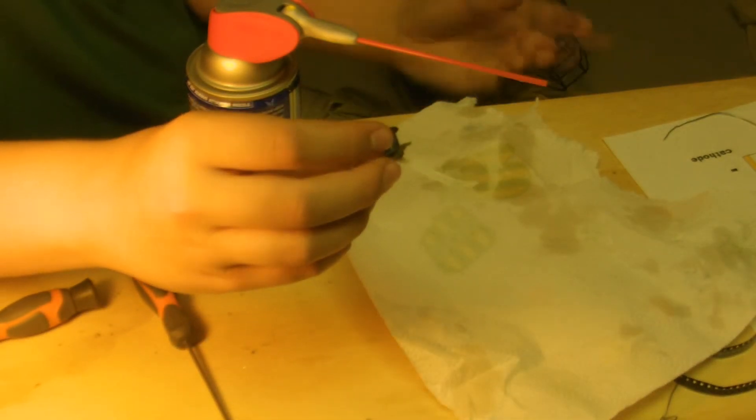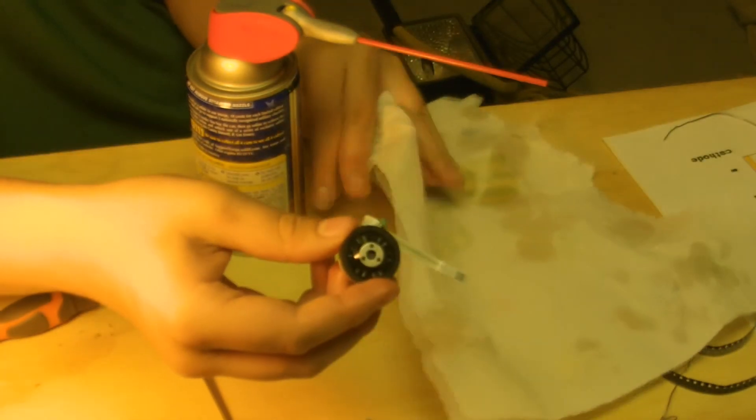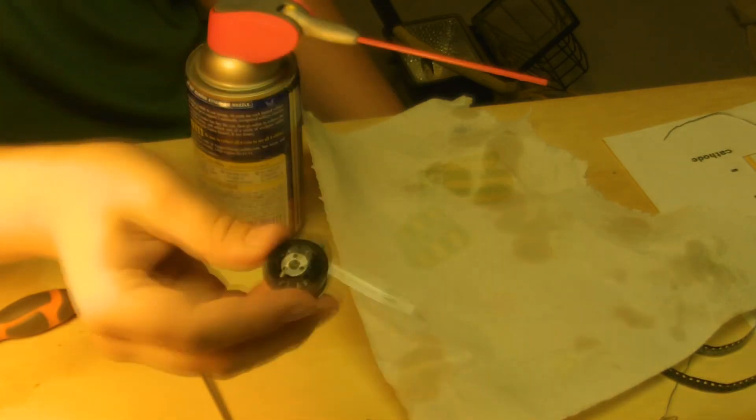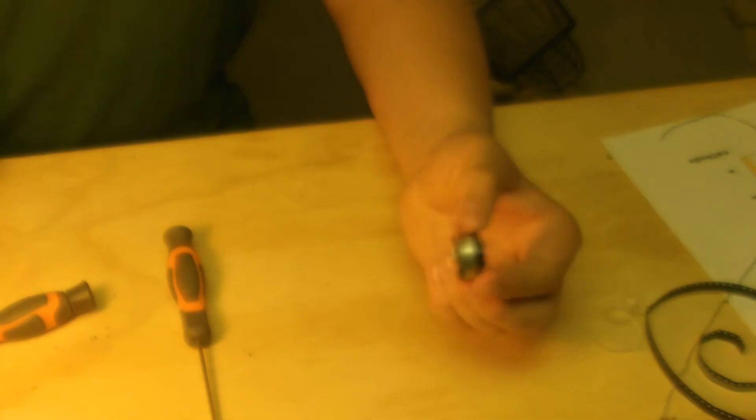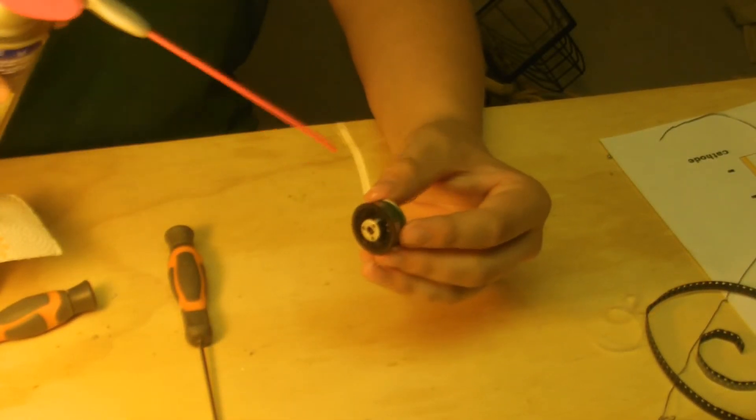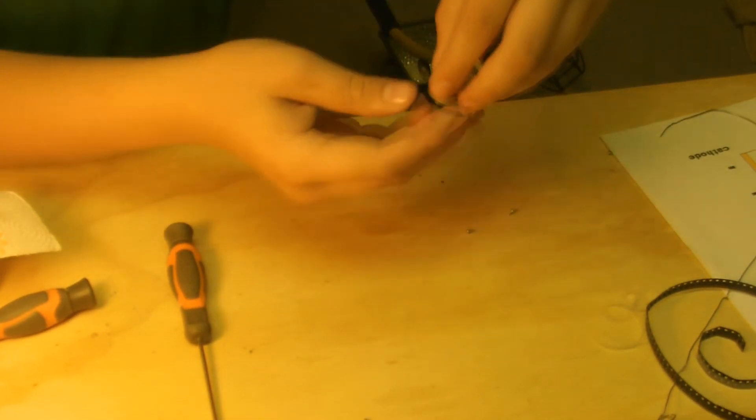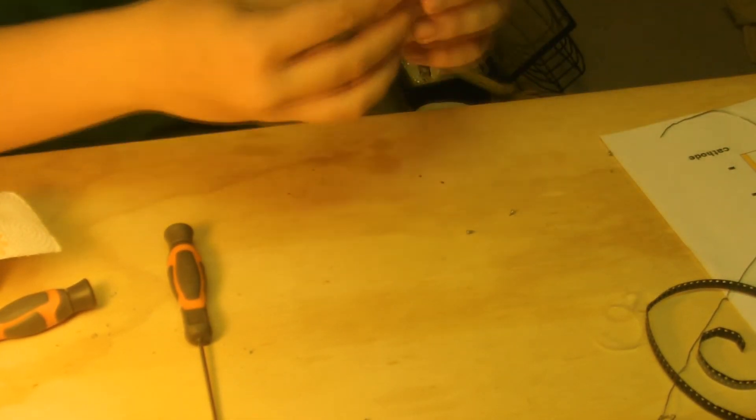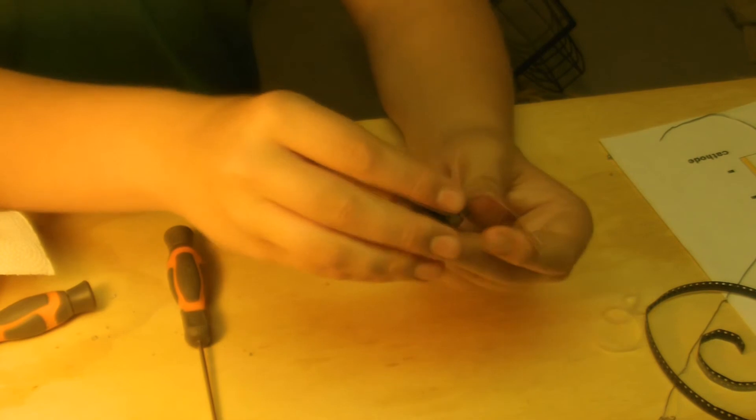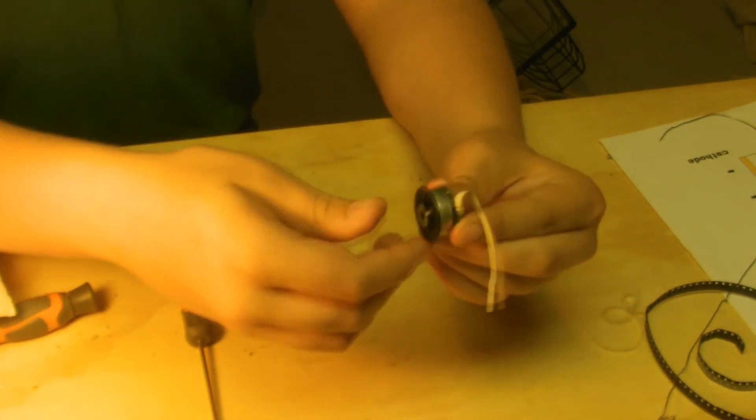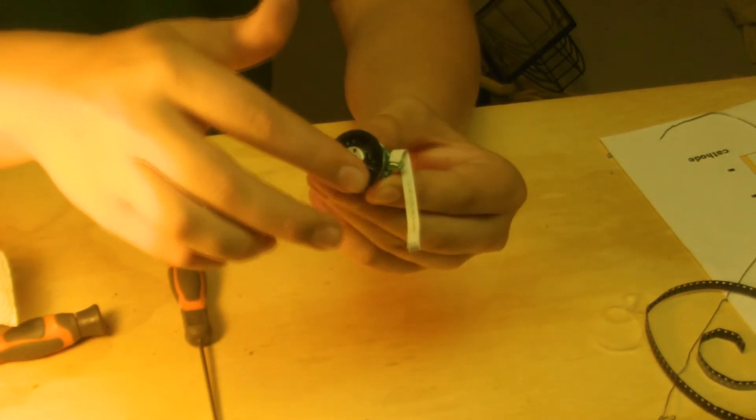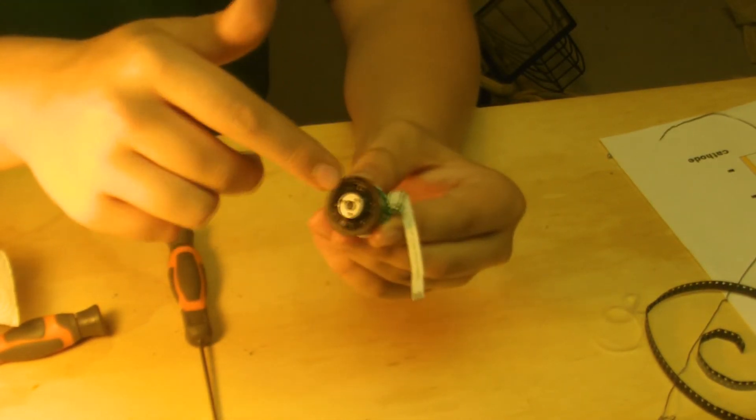So basically you just keep spraying it a little bit at a time and working it until it gets to spinning really smooth. I've been working it for a while, for a few minutes I would say. I found that turning it upside down is actually one of the best ways to get the WD-40 in there, so it all goes down and drips down to where the actual part that spins is. So now as you can see it's spinning nice and smoothly, definitely compared to before when it was stuck.